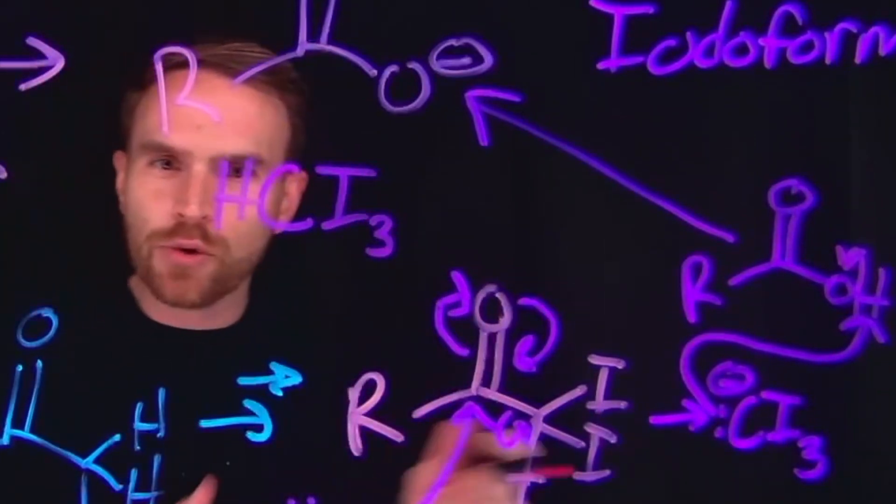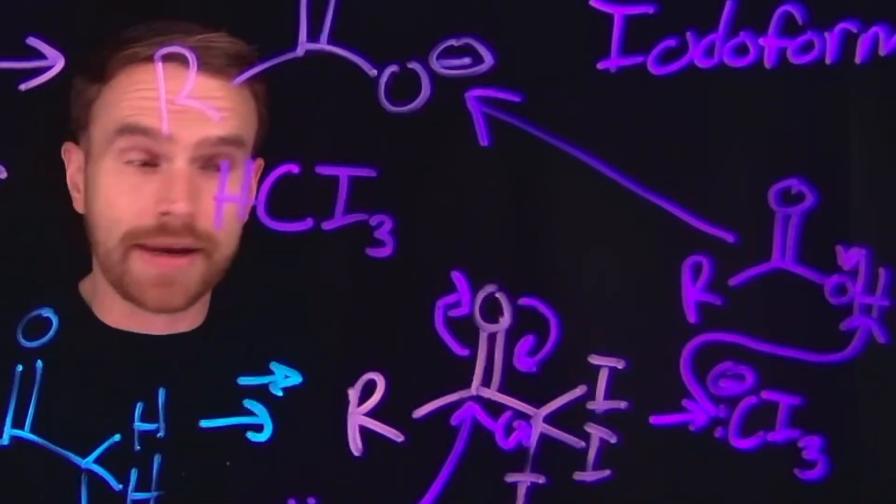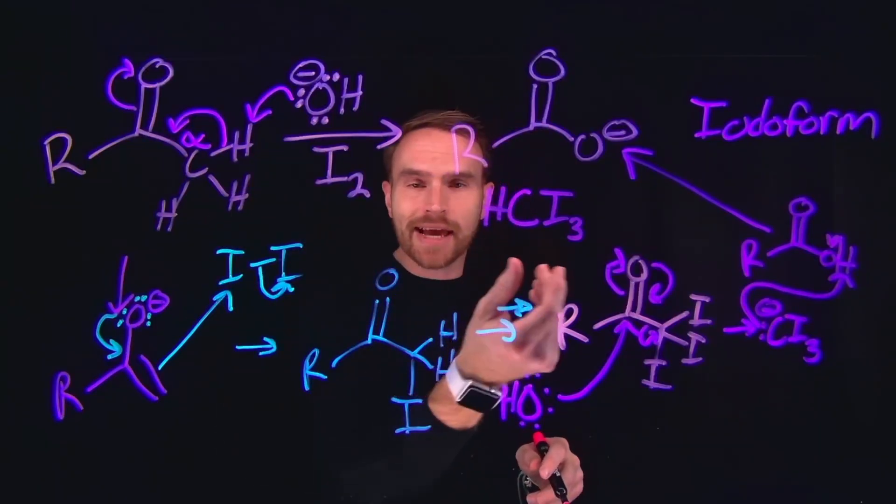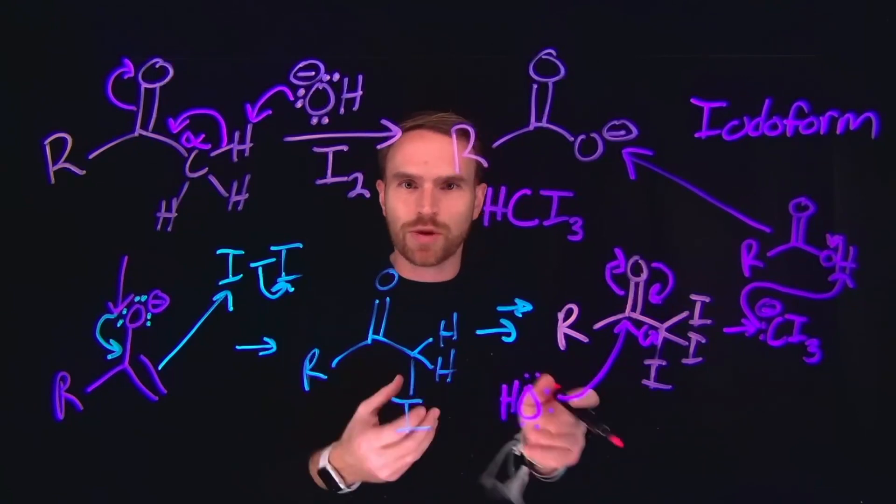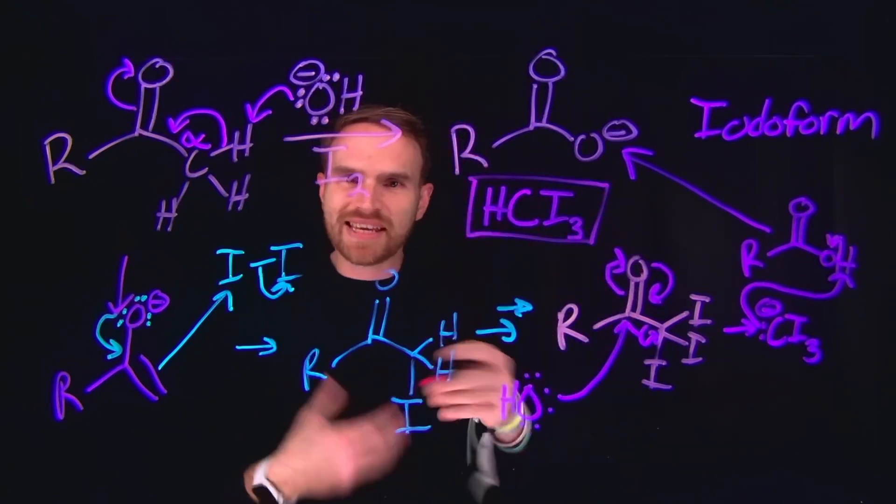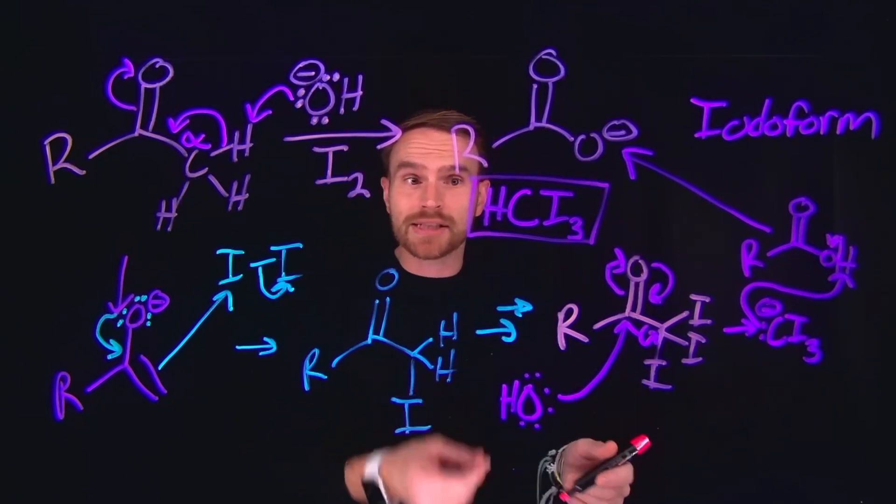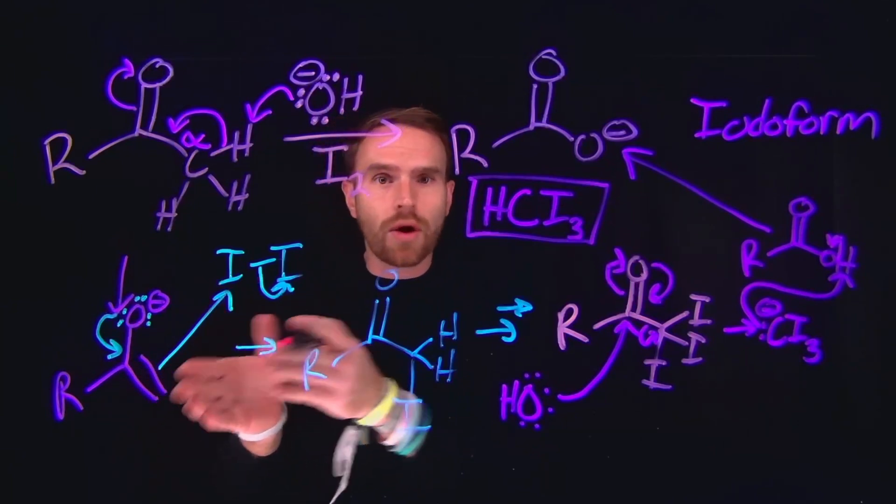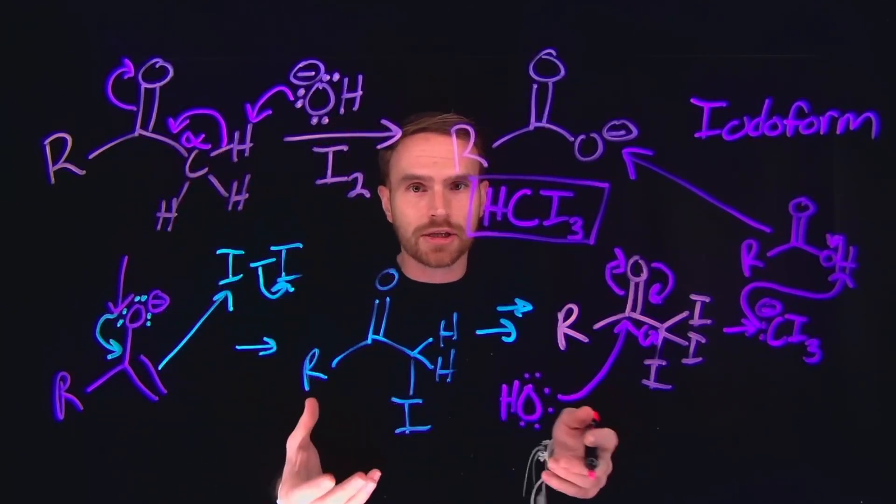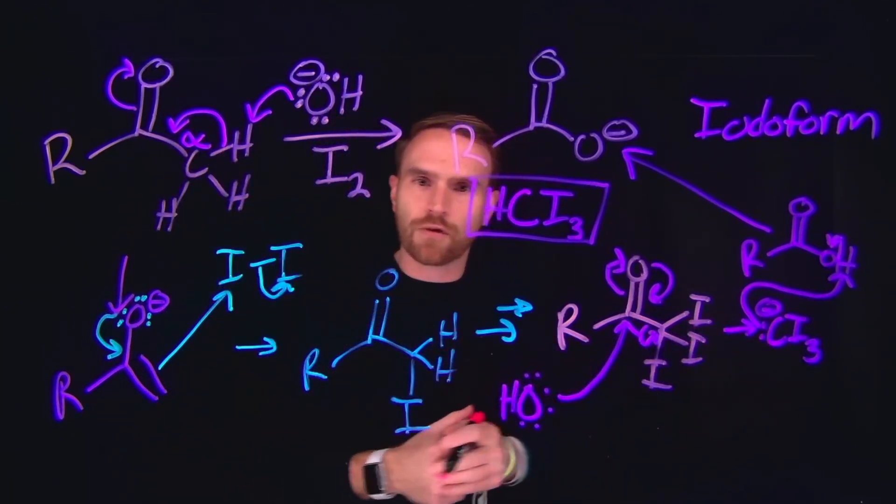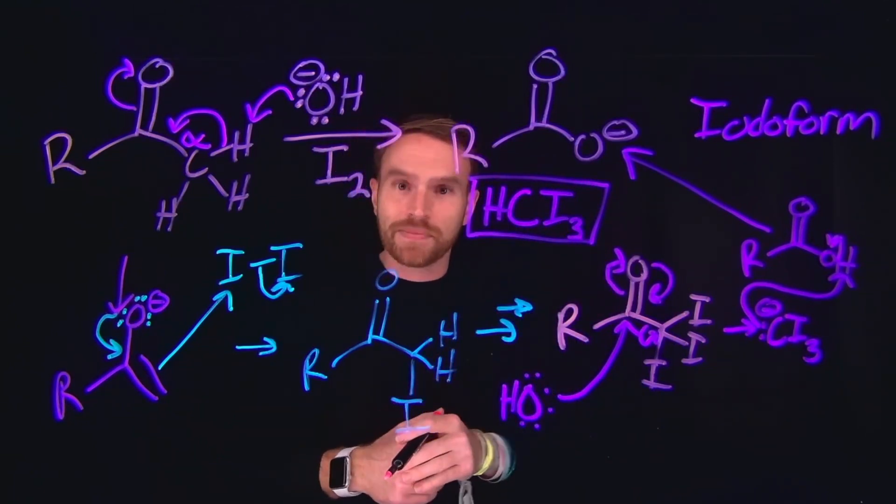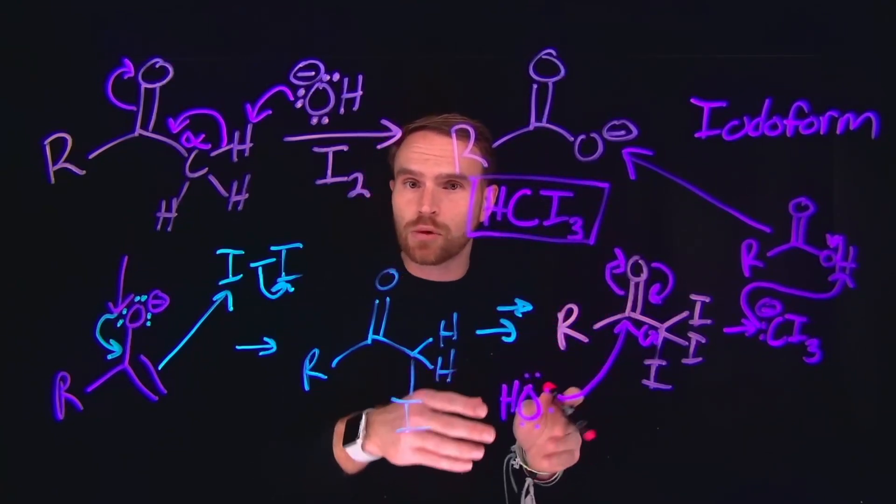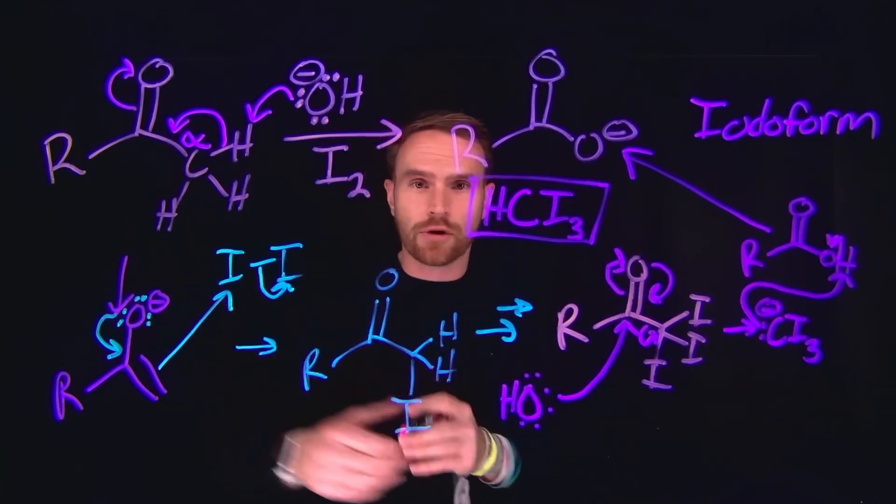And importantly, this iodoform reaction is an iodoform test because this will allow us to form what is a yellow solid precipitate in this reaction. And this yellow solid precipitate can be easy to visualize. And this formation of this compound allows us to discern whether or not some material had a carbonyl group in it initially because this sequence of transformations will form this yellow solid precipitate, giving an experimentalist a clear indication that the only formation of this reaction could be possible through subsequent reactions with different carbonyl groups.